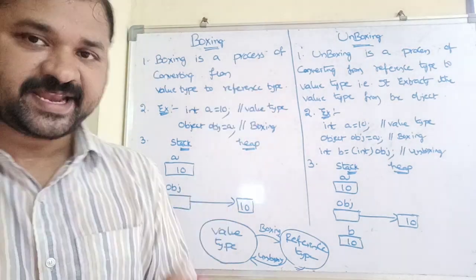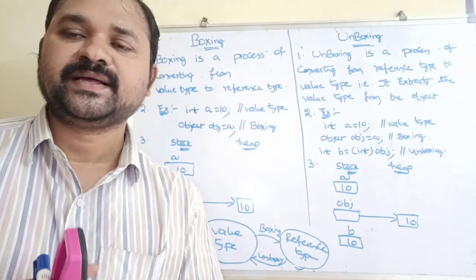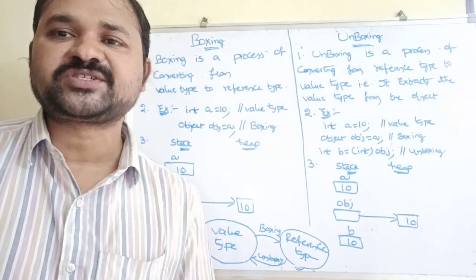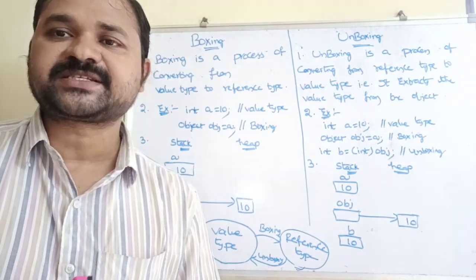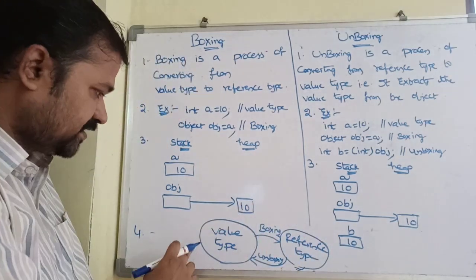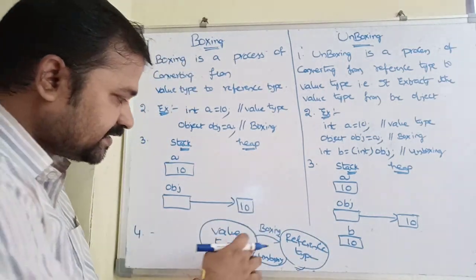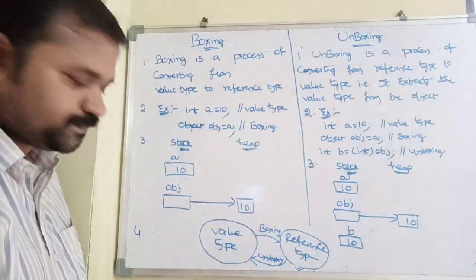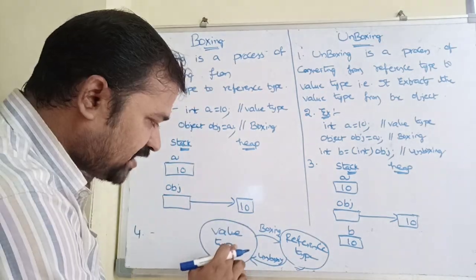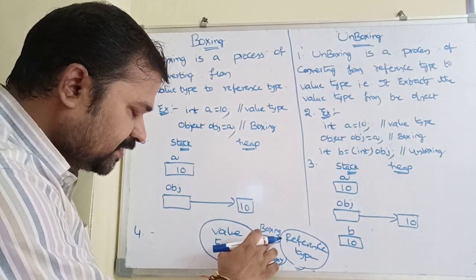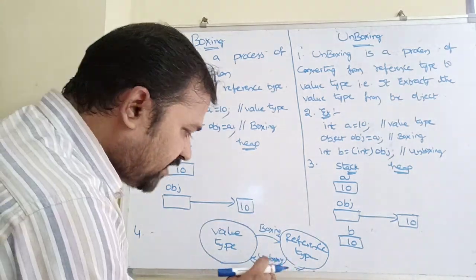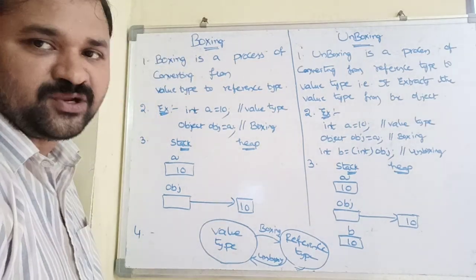Let's see about boxing and unboxing. There are mainly two types of data types: value type and reference type. Value type means a variable stores a value; reference type means a variable stores an address or reference. Boxing means converting from value type to reference type, whereas unboxing means converting from reference type to value type.